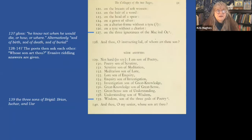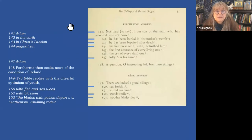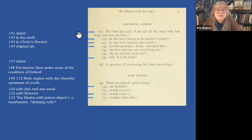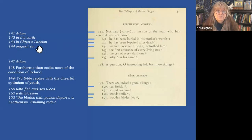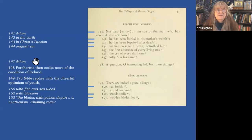He then asks Fairkertnia whose son he is. Fairkertnia says: 'Not hard to say: I am the son of the man who has been and was not born.' So a riddle — in other words, Adam. Adam has been but was not born; he has been buried in his mother's womb — in other words, buried in the earth; he has been baptized after death in Christ's passion. 'His first presence, death, betrothed him' — in other words, original sin. 'First utterance of every living one, the cry of every dead one. Lofty A is his name' — in other words, Adam. That's just in case you didn't get the riddle.